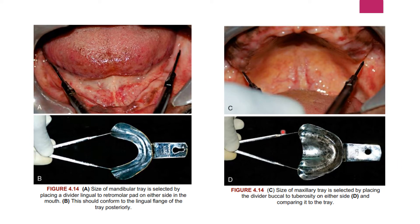Tray size selection is performed using a divider or calipers. For the lower tray, the tips of the divider are placed on the lingual aspect of the ridges just below the retromolar pad on the right and left sides. This measurement must be comparable to the lingual flanges of the tray posteriorly. The divider is placed lingual to the retromolar pad on either side of the mouth, and this should conform to the lingual flange of the tray posteriorly.